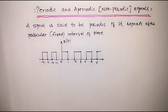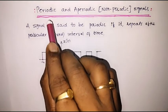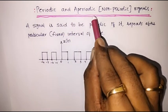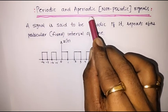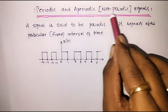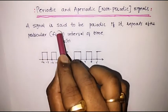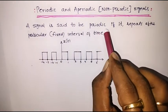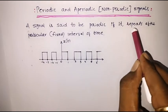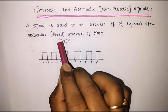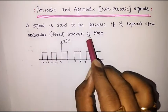In this lecture, we will study periodic and aperiodic signals. Aperiodic is also known as non-periodic signals. A signal is said to be periodic if it repeats after a particular or fixed interval of time.